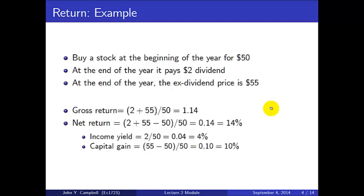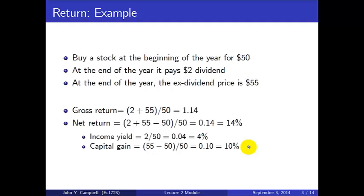Let's work through an example. Suppose you buy a stock at the beginning of the year for $50. At year end it pays a dividend of $2, and you sell it at an ex-dividend price of $55. The gross return is ($2 + $55) / $50 = $57 / $50 = 1.14. The net return is 0.14 or 14%, which breaks into an income yield of $2/$50 = 4% and a capital gain of $5/$50 = 10%.